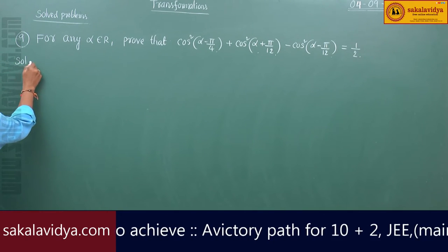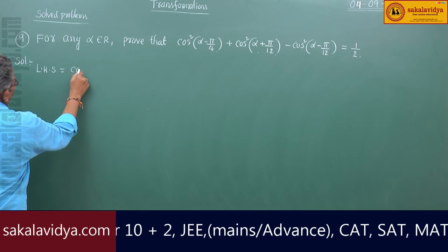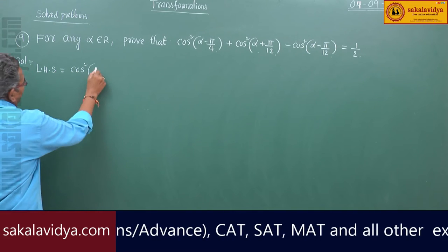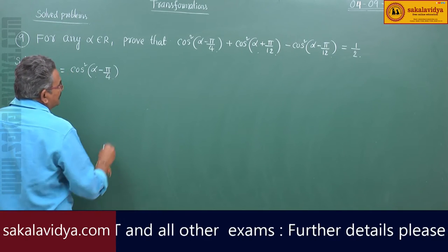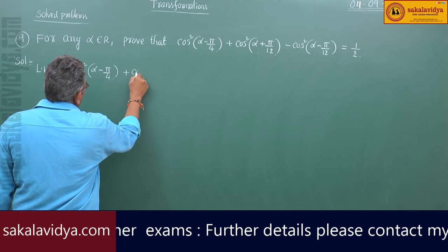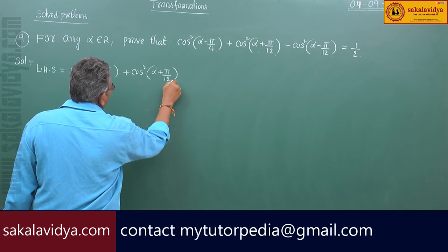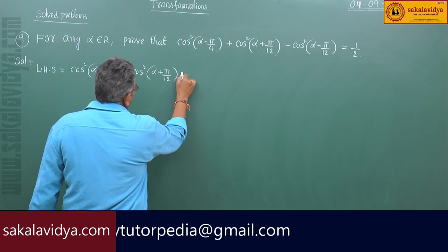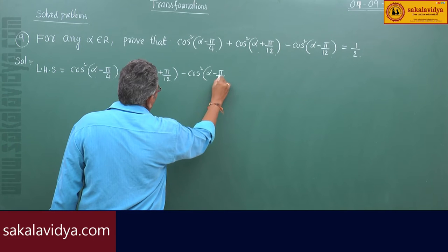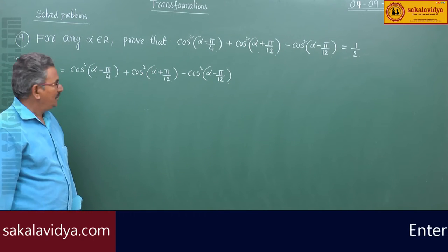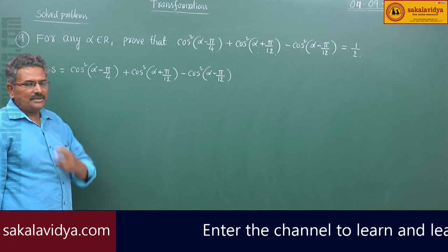Left hand side: cos squared (alpha minus pi by 4) plus cos squared (alpha plus pi by 12) minus cos squared (alpha minus pi by 12). Now, cos squared theta is equal to (1 plus cos 2 theta) by 2.